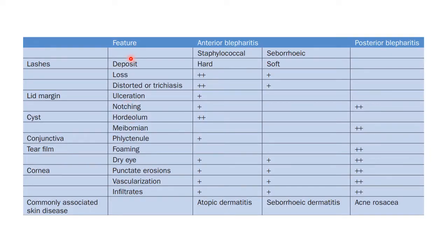Regarding features of blepharitis: lash deposits will be hard in staphylococcal anterior blepharitis whereas they will be soft in seborrheic anterior blepharitis. Lash loss, distorted lashes or trichiasis can also be seen in anterior blepharitis. Lid margin ulceration is seen in staphylococcal anterior blepharitis, whereas lid margin notching is more prominent in posterior blepharitis. Hordeolum cysts can be seen in staphylococcal anterior blepharitis whereas meibomian cysts can be seen in posterior blepharitis. Conjunctival phlyctenule can be seen in staphylococcal anterior blepharitis. Tear film foaming is seen in posterior blepharitis.